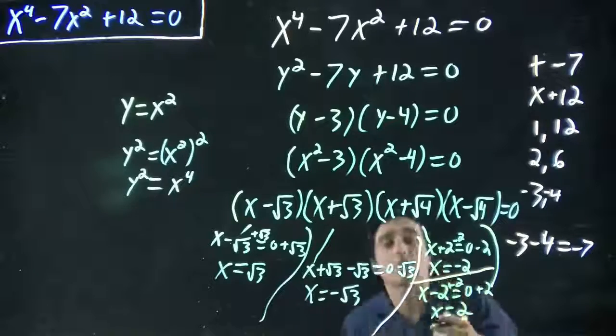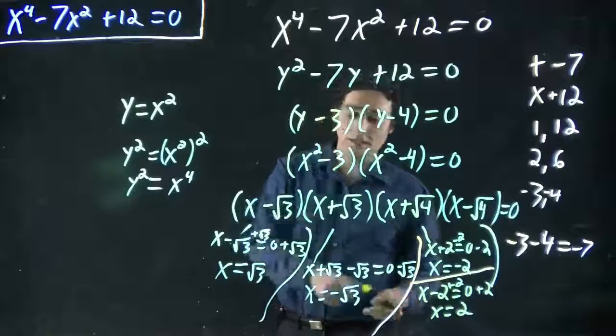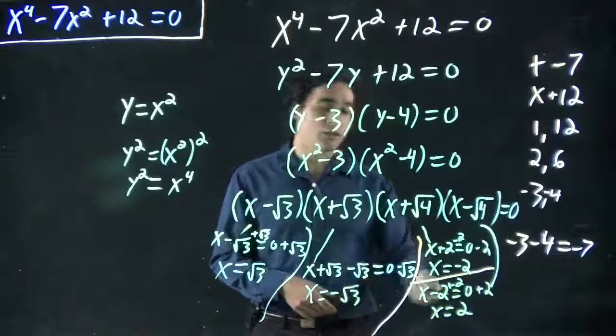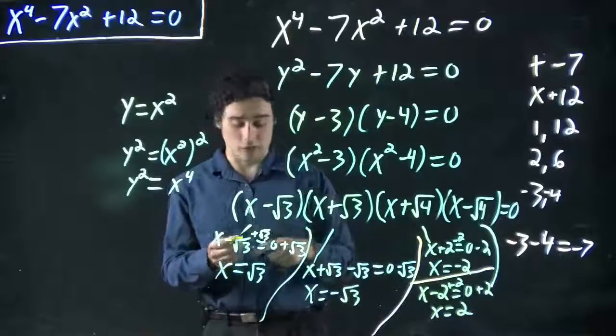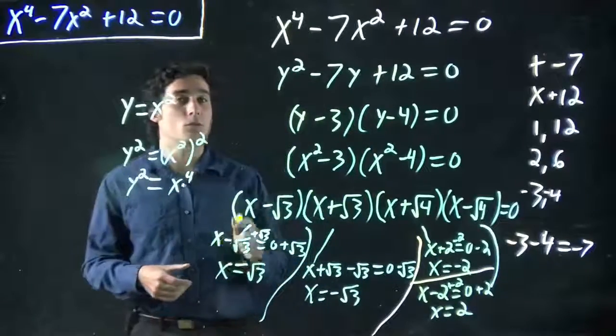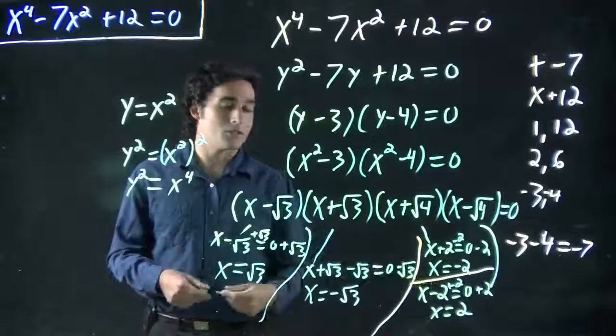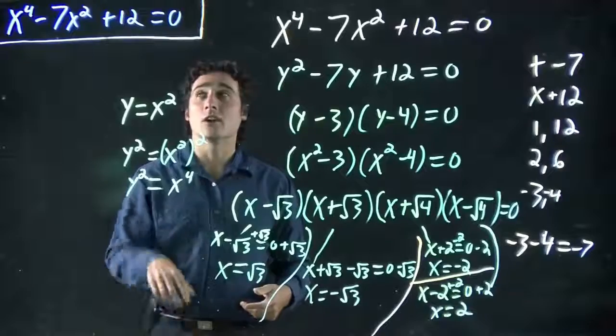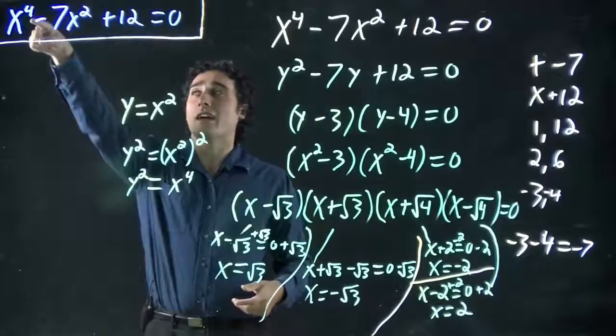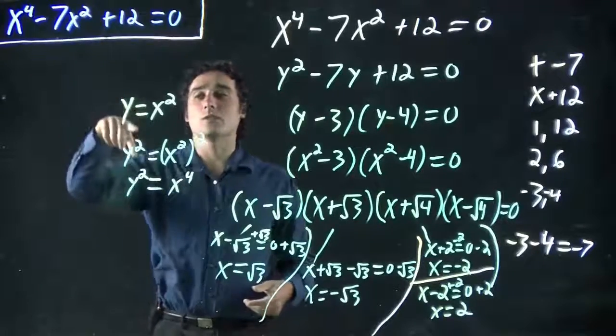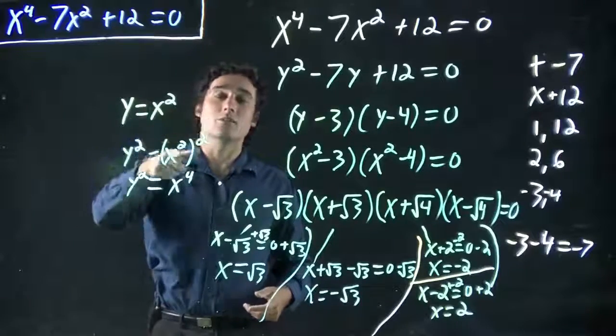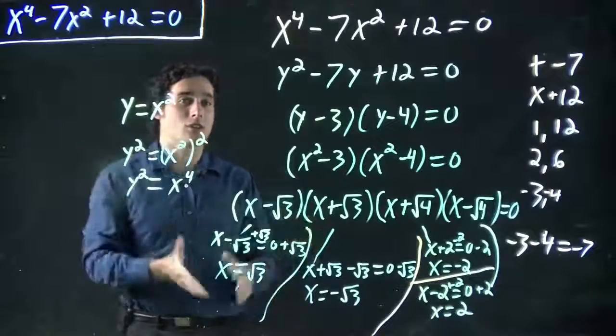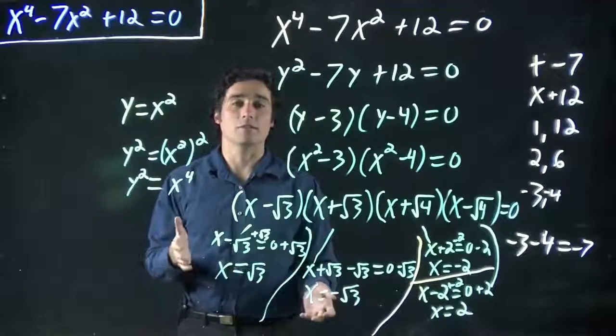So, we actually have four solutions to this problem. x equals square root of 3, minus square root of 3, minus 2, and plus 2. In fact, if you check them all out in that original equation, all of them would work. All of them would be valid. Just a little bit more. Using a substitution, we're still able to solve it. So, same thing. Again, if we had x to the 6 and x cubed, we just do a substitution y equals x cubed. As long as this one is double that one, we can do a substitution. And still solve it like we have been. So, thank you.